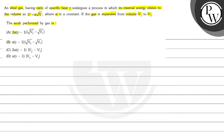The options are: (A) 2 alpha (gamma minus 1) times (root V2 minus root V1), (B) alpha (gamma minus 1)(root V2 minus root V1), (C) 2 alpha (gamma minus 1)(V2 minus V1), and (D) alpha (gamma minus 1)(V2 minus V1).